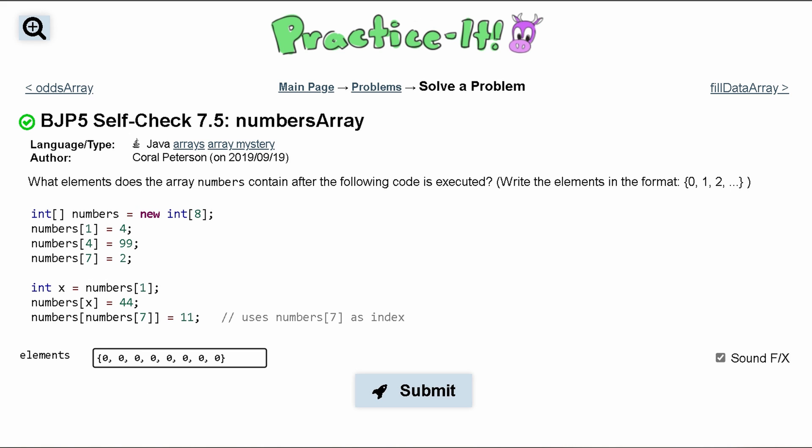So at index one, which would be this right here, we have four. At index four we have 99. So zero, one, two, three, four - this should be 99.